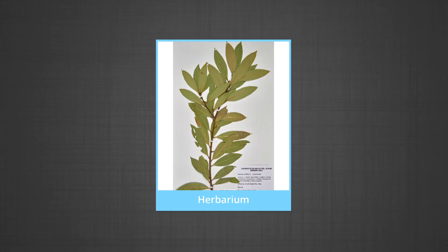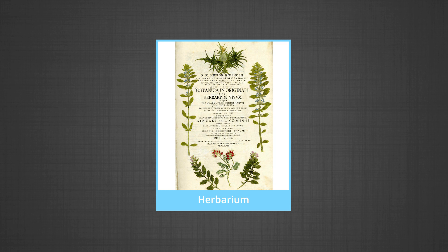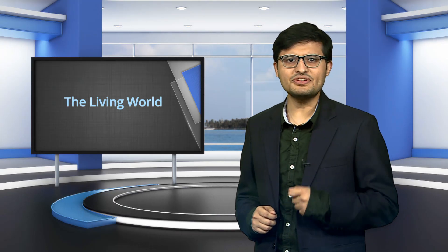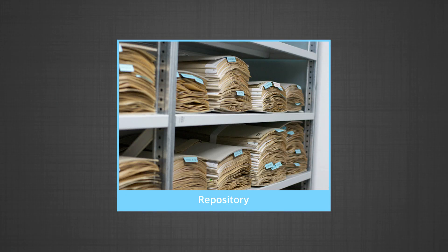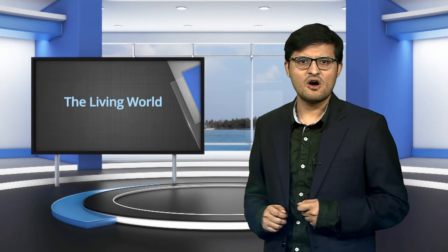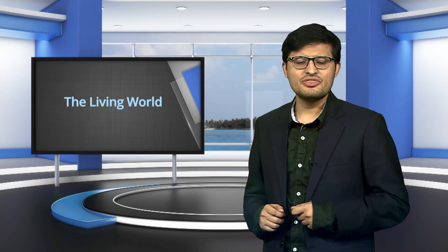A herbarium is a collection of plants that have usually been dried, pressed and preserved on sheets. Plant samples are taken from the field, dried or otherwise preserved, then carefully stored in archival conditions to ensure their longevity. The sheets are arranged according to an accepted system of classification, usually the Bentham and Hooker system. The storage of sheets forms a repository for future reference, and is quite useful for people involved in taxonomic studies. All institutes dealing with botanical studies maintain their herbaria.